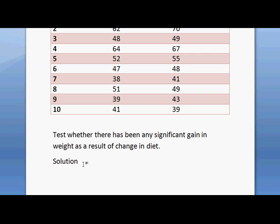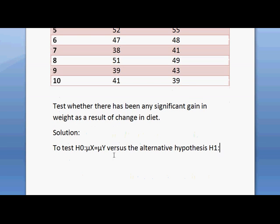Let's define the hypothesis which needs to be tested. To test the null hypothesis H₀: μX = μY versus the alternative hypothesis H₁: μX > μY. That is, μX is greater than μY. That is the claim that we are testing, and μX and μY are the means of weight before and after diet.